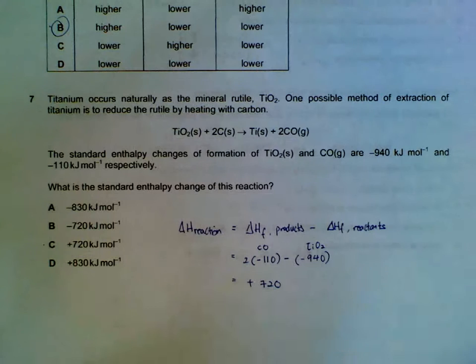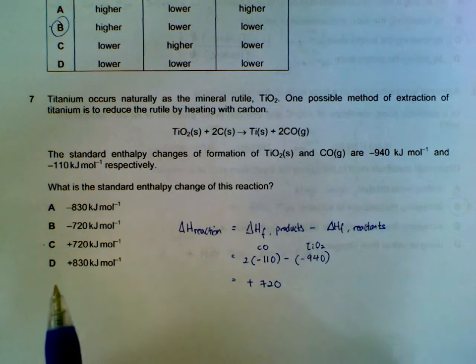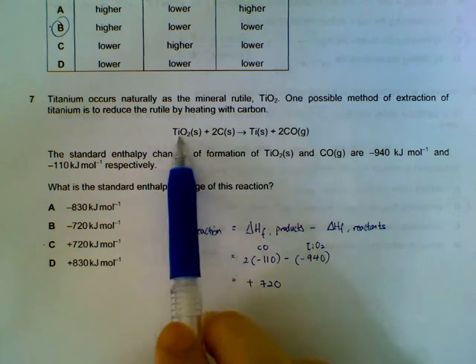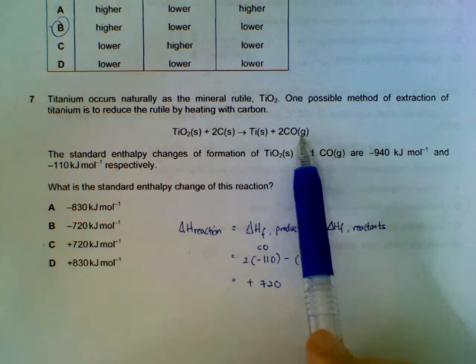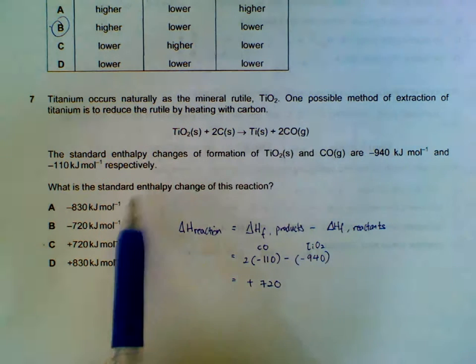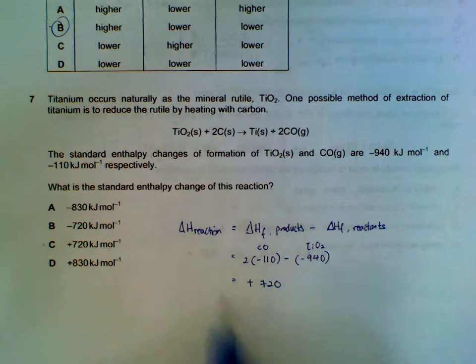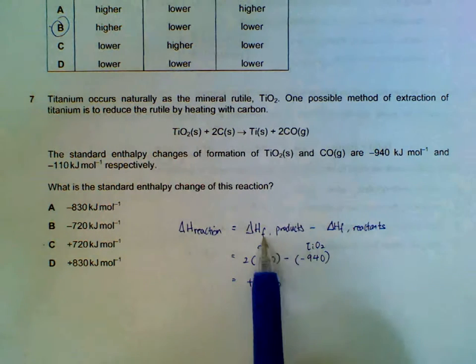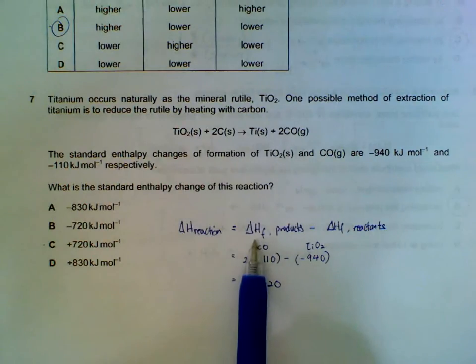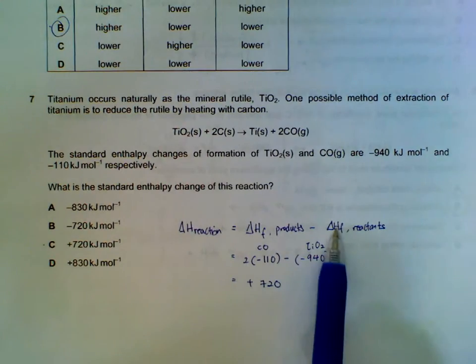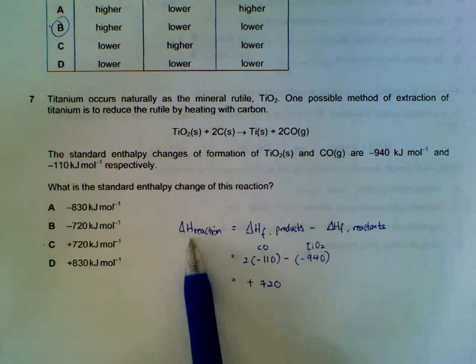Number 7. Titanium reacts with the mineral or titanium reacts with carbon. And then we get titanium being extracted and carbon monoxide. So what is the enthalpy change of this reaction? In general, we are given heat of formation here. So in general, heat of formation of products minus heat of formation of reactants will get heat of reaction.